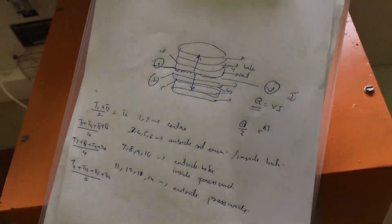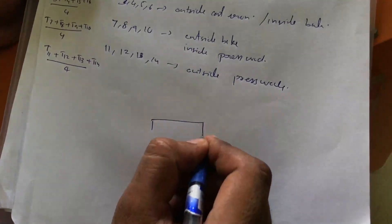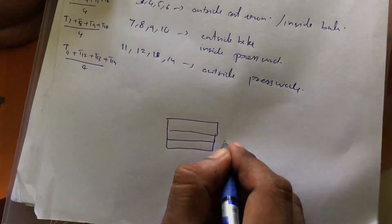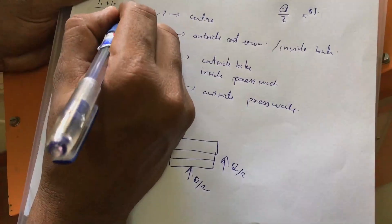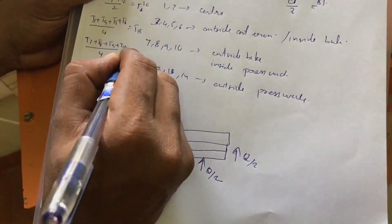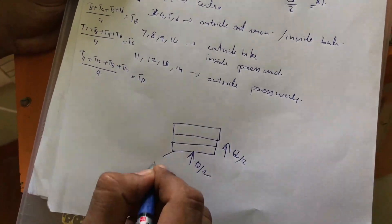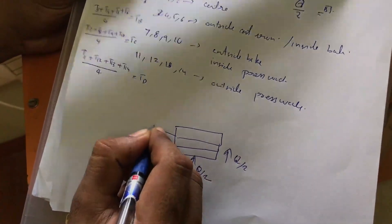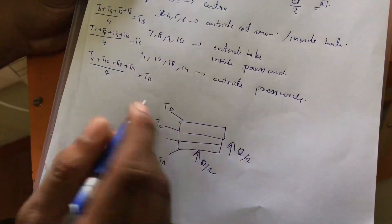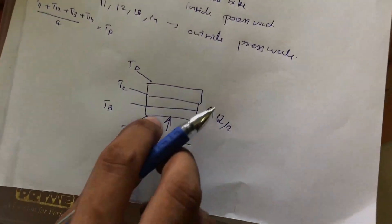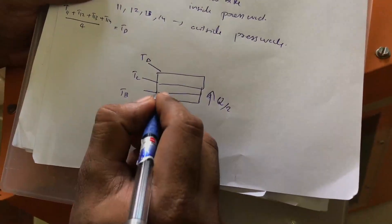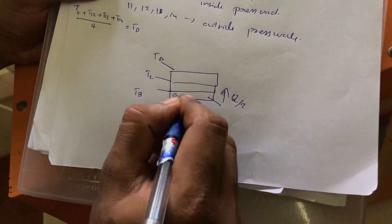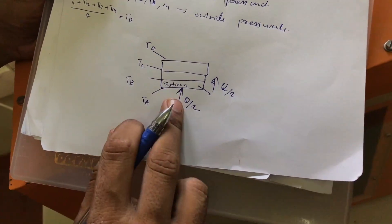Now we have obtained the temperatures of each wall. Considering the composite wall in one direction, Q/2 heat passes through it. We label the junction temperatures as Ta, Tb, Tc, and Td. We are able to obtain the temperature at each junction. To find the resistance of the first layer — cast iron — we have the temperature difference Ta minus Tb.